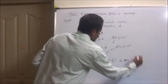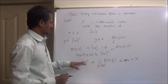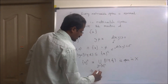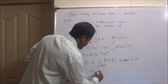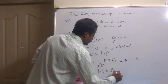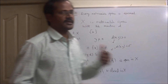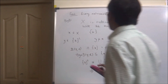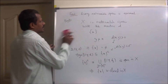Therefore it is open in X. Since the complement of {x} is open in X, we get that {x} is closed in X. That is the first condition we need to say that X is a normal space. Now come to the second condition.